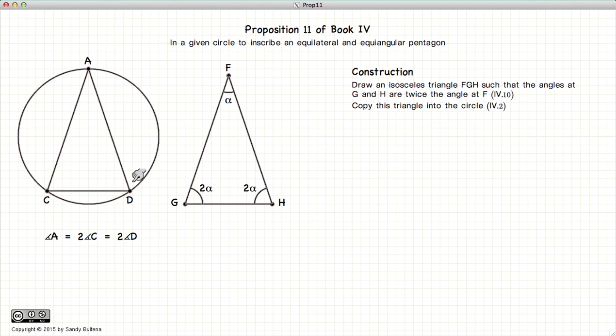So now we have inside this circle a triangle, where this angle here is twice the angle there. And this angle here is twice the angle there.